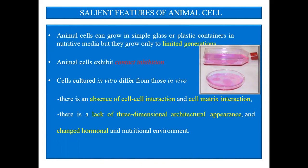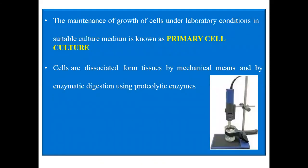Contact inhibition means that cells cultured in vitro differ from those in in vivo conditions. There is an absence of cell-cell interaction and cell-matrix interaction, a lack of 3D architectural appearance, and changes in the hormonal and nutritional environment. The maintenance of growth of cells under laboratory conditions in suitable culture media is known as primary cell culture. These cells are dissociated from tissues by mechanical means and by enzymatic digestion using proteolytic enzymes.